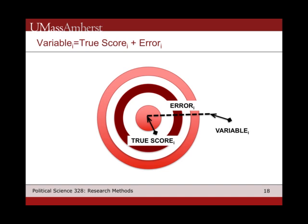Anytime we have a variable — whether measuring political interest, a behavioral variable like whether you voted, or income — there's some true score that exists out there in the world, your real level of political interest, and then there's some error term. That error term can come from all sorts of places: you didn't read the directions correctly, you've been busy at work so you underrate your interest, or the way the question is asked led to confusion. The thing we actually measure is this combination of the true score plus the error term. The true score is hitting the bullseye; the error term is what we're picking up for various other reasons.